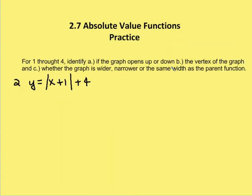Next question — same process. Does the graph open up or down? There's nothing stated in front of the absolute value sign, so we can assume A is 1, and since it's positive, the graph opens up. The vertex of the graph: our H value is going to be negative 1 — remember it's the opposite sign — and our K value is 4, so our vertex is (−1, 4). Is the graph wider, narrower, or the same width as the parent function? The A value is 1, so it's going to be the same as the parent function.